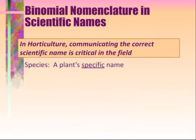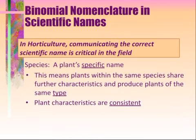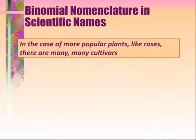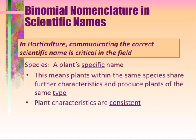Next, the species. The species is a plant-specific name. Plants within the same species share further characteristics and produce plants of the same type, and these plant characteristics are consistent. Think of the species as your first name — it sets you apart from, say, your brother, your sister, your mom, or your dad.